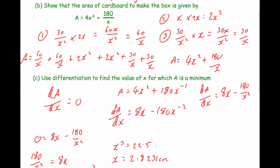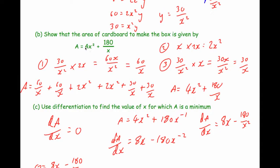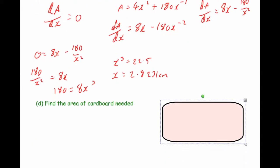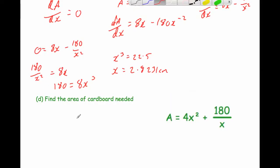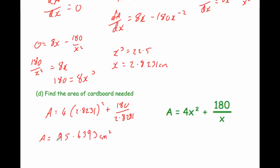Part D says find the area of cardboard needed. We substitute X equals 2.8231 into A equals 4X squared plus 180 over X. So A equals 4 times 2.8231 squared plus 180 over 2.8231, which equals 95.6393 centimetres squared. So the area of cardboard needed for the cuboid is 95.6393 cm squared.